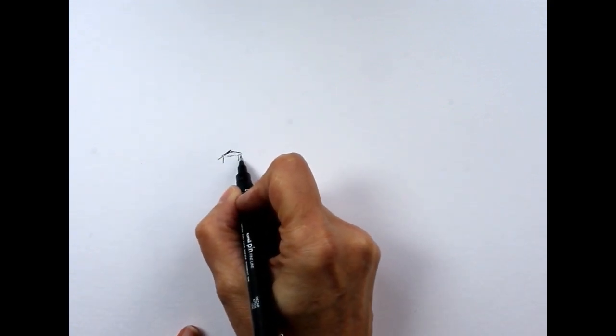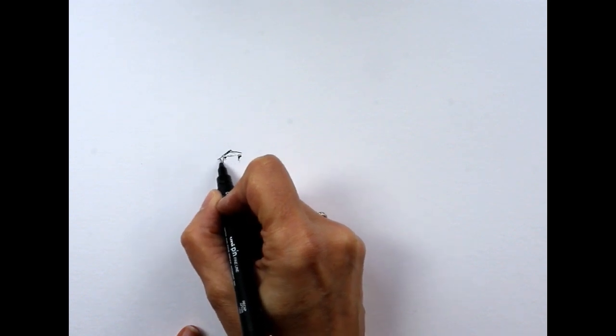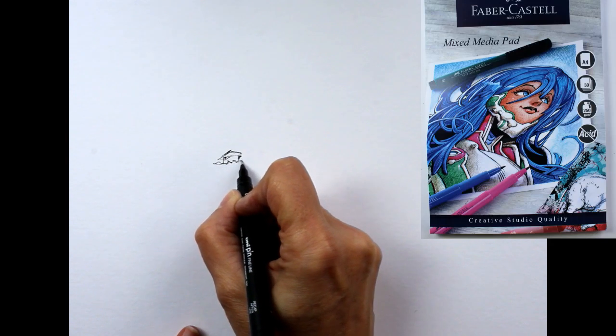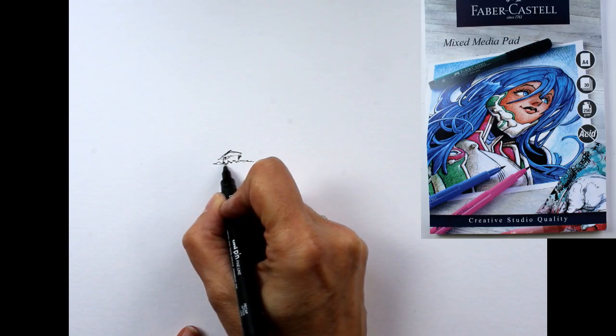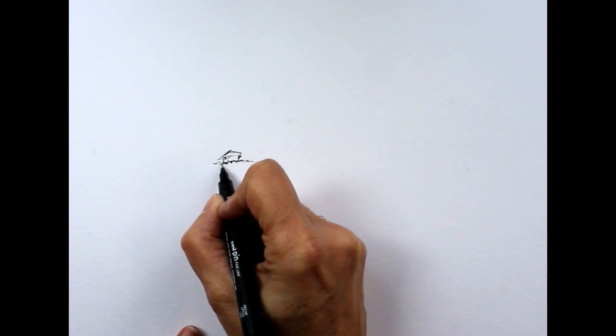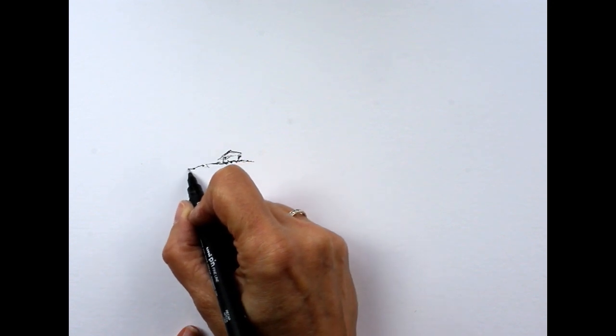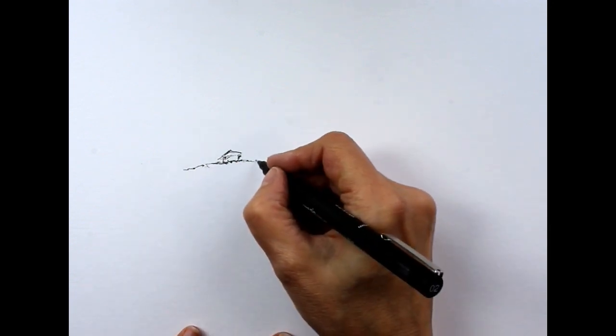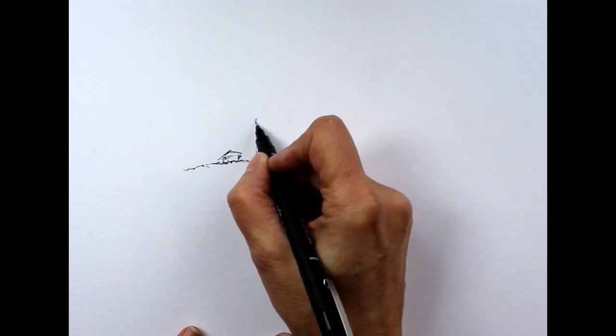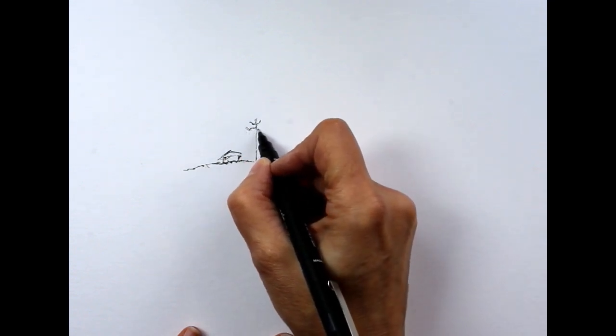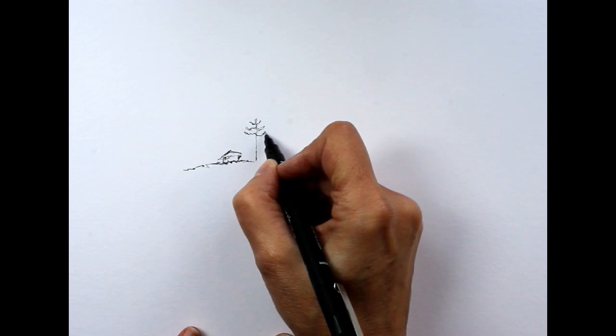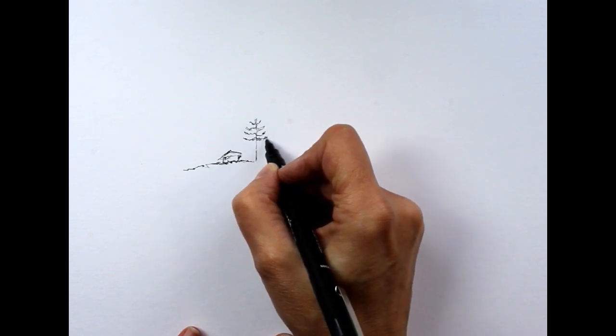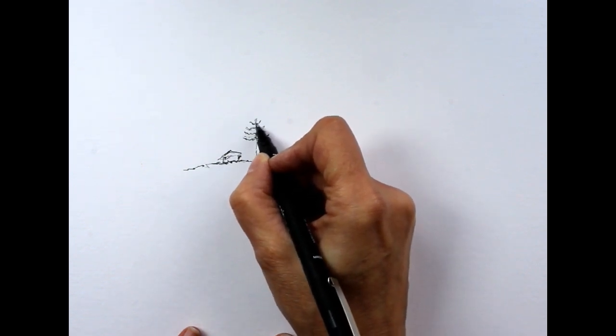The pen that I'm using is a size 0.2 uni-pin fineliner and it's black. The pad that I'm using is an A4, 250 grams in weight, a Faber-Castell mixed media pad. I do use it an awful lot for watercolors because it's a lovely smooth paper which works well with the very small nib that I'm using here to draw.